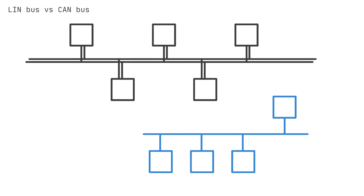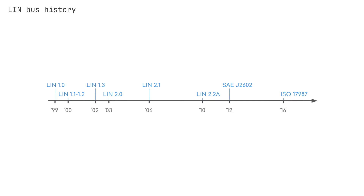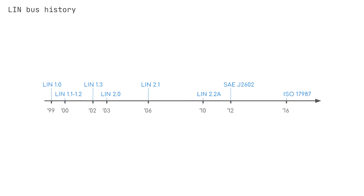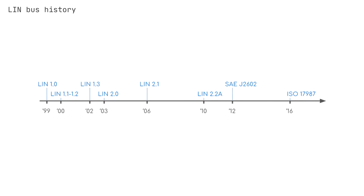To understand the origin of LIN, let's briefly look at the history. In 1999, LIN 1.0 was released by the LIN consortium: BMW, VW, Audi, Volvo, Mercedes-Benz, Volcano Automotive, and Motorola. In 2000, the LIN protocol was updated to LIN 1.1 and LIN 1.2. In 2002, LIN 1.3 was released, mainly changing the physical layer. In 2003, LIN 2.0 was released, adding major changes. This version is widely used today.